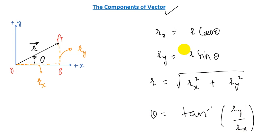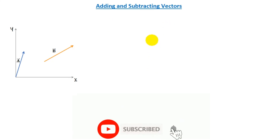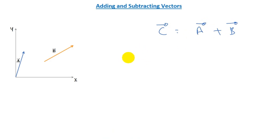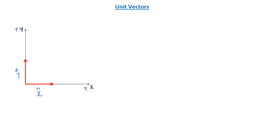Next we discussed how to add and subtract vectors using two methods: the graphical method and the component method. In the component method, if vector C equals vector A plus vector B, then the x component of C is Ax plus Bx, and the y component of C is Ay plus By. For subtraction, the plus signs become negative. We also discussed unit vectors: x-hat and y-hat are dimensionless vectors of unit length in the positive x and positive y directions respectively.